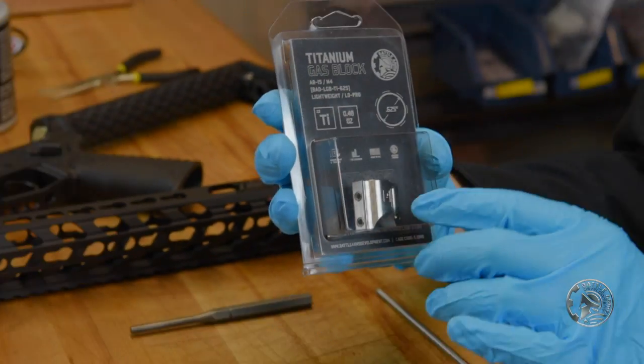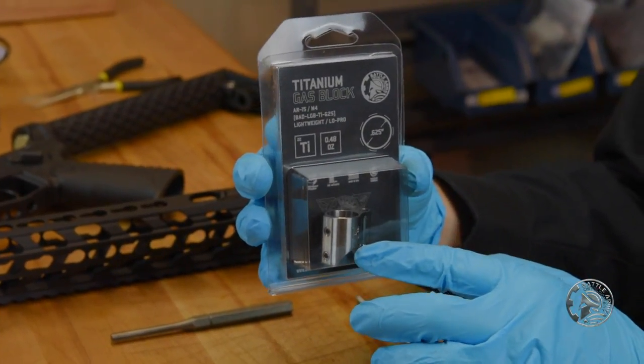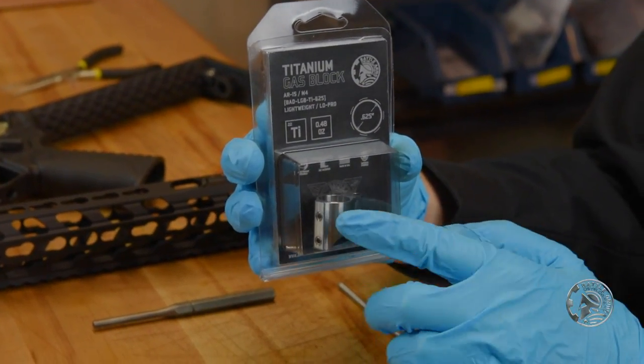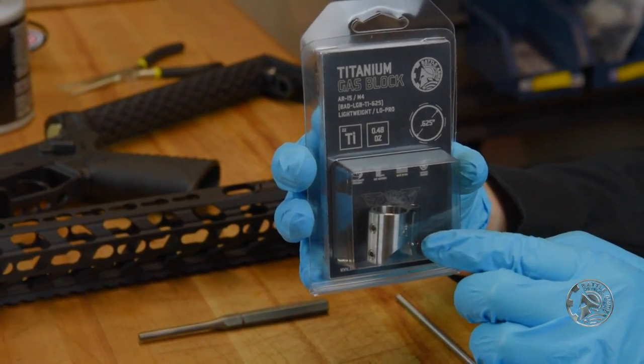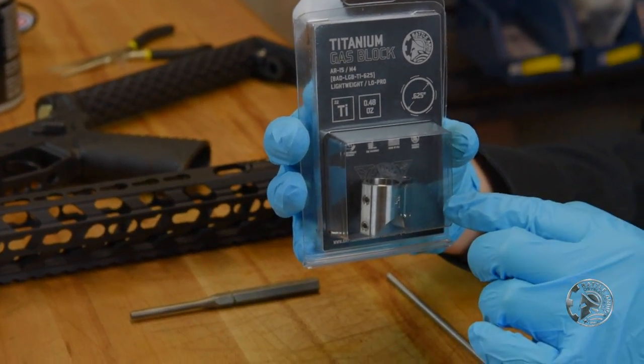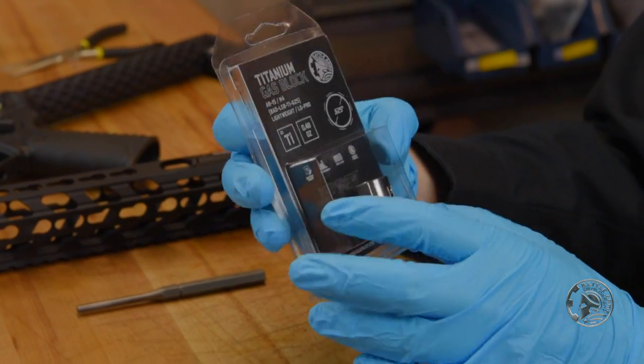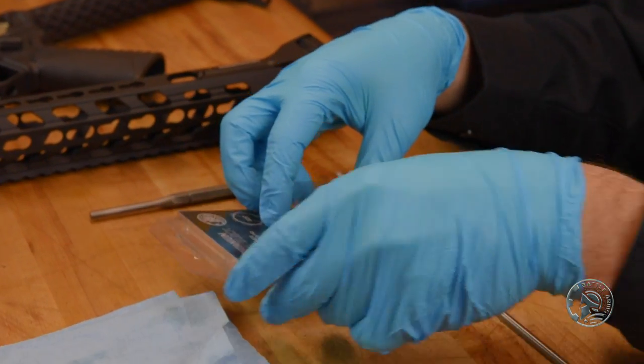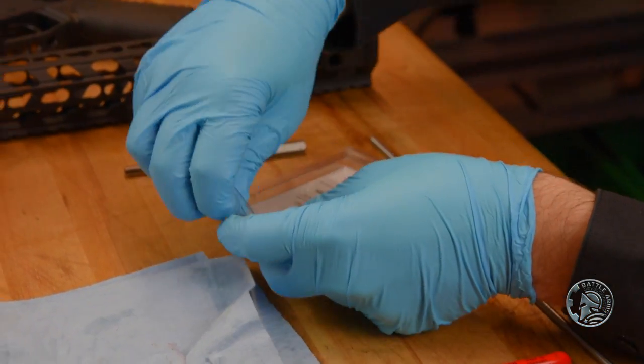Since our barrel uses a 0.625 inch gas journal, we'll be using our BAD titanium 0.625 inch low profile gas block. This is a set screw style gas block and it comes with the roll pin.